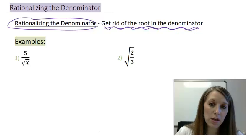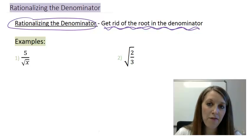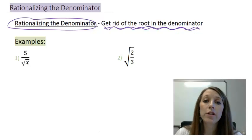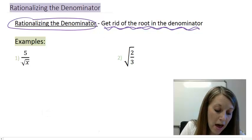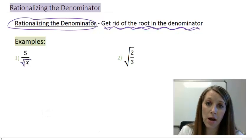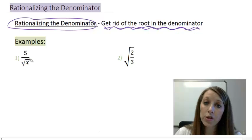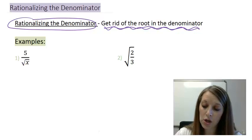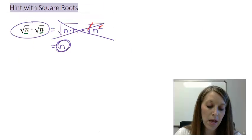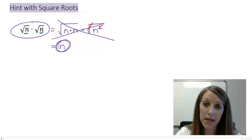So let's start with example 1 here. I have 5 divided by square root of x. Again, my goal is to rationalize the denominator, which means when I'm finished with this problem, I should have no more roots in the denominator. Well, the trick that I'm going to use here goes back to that hint that I just showed you in the last video. It says anytime I take a square root by itself, I'm just left with the number on the inside with no more root involved.